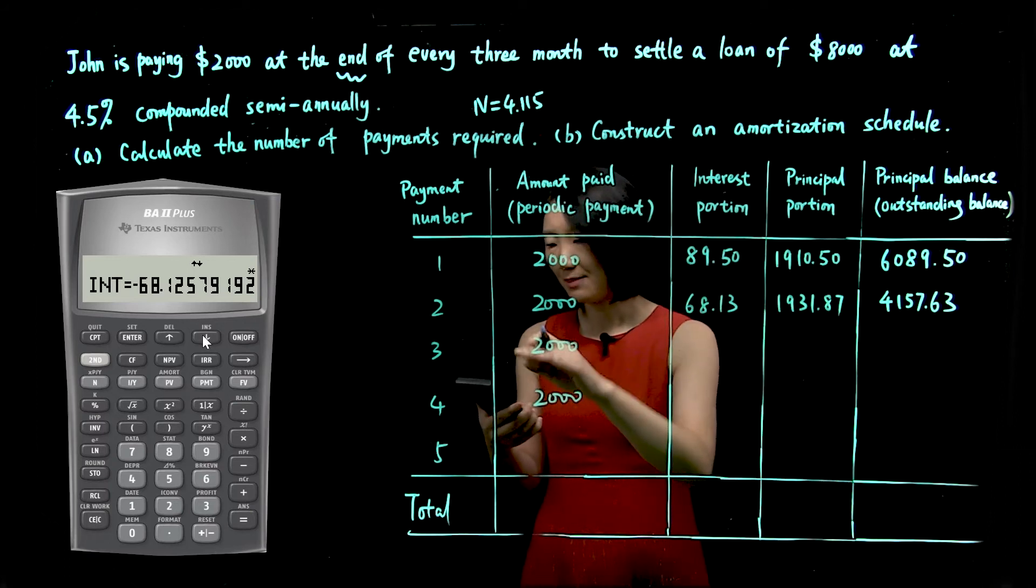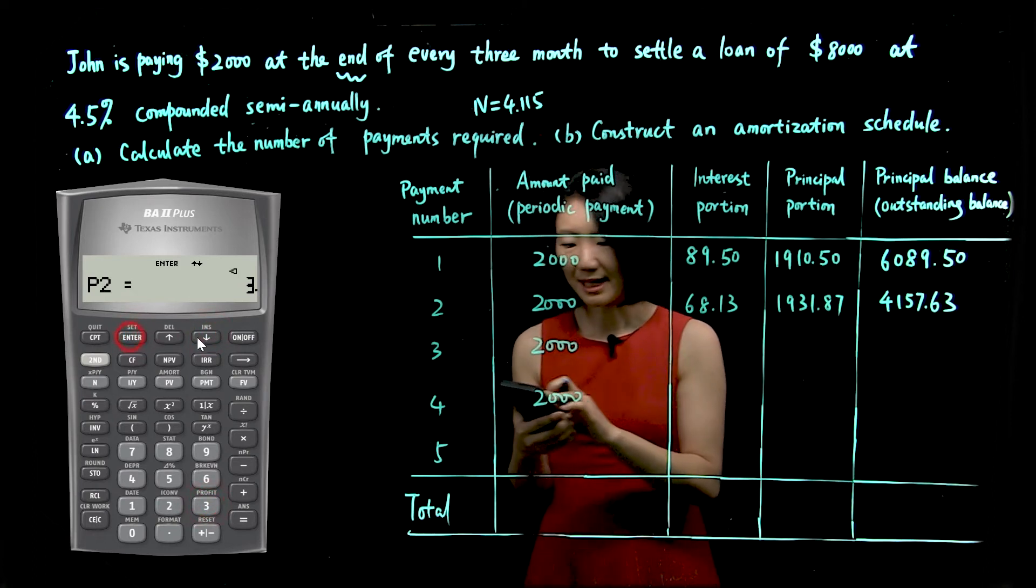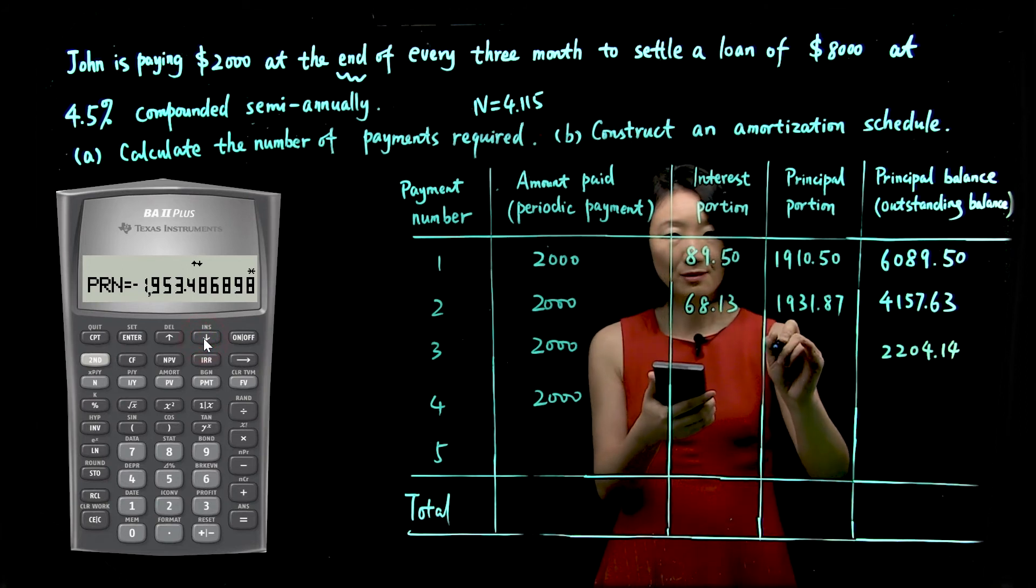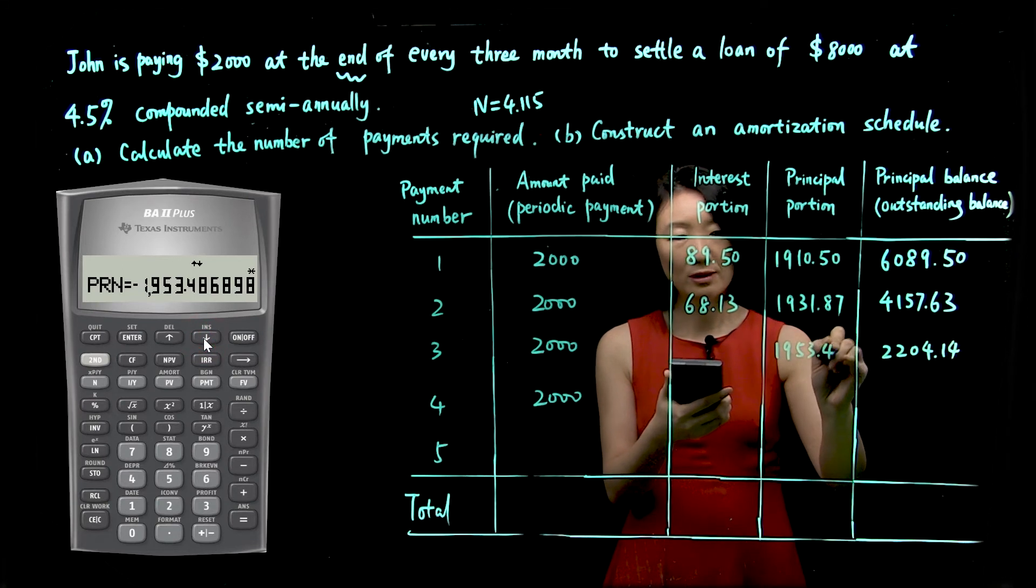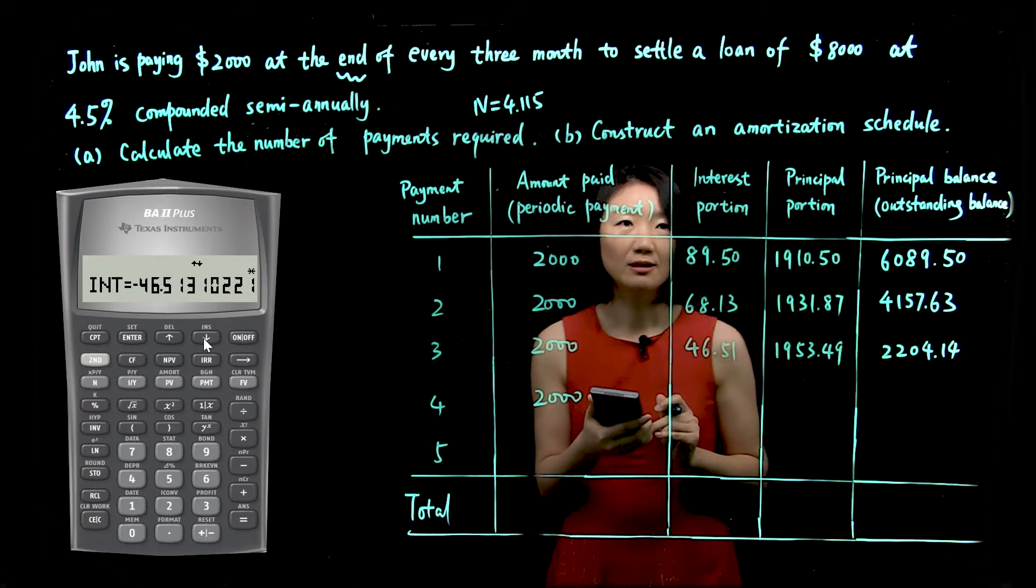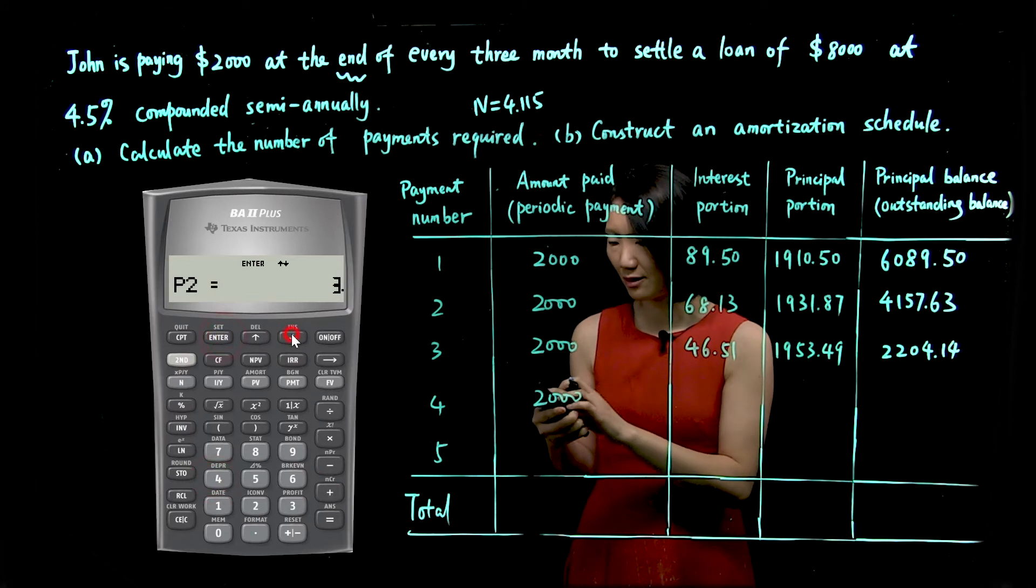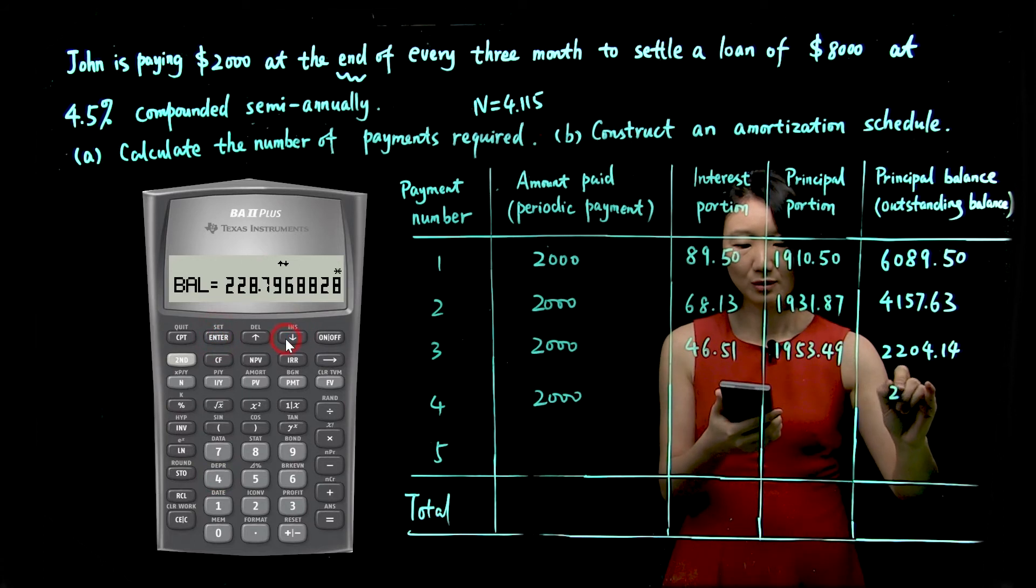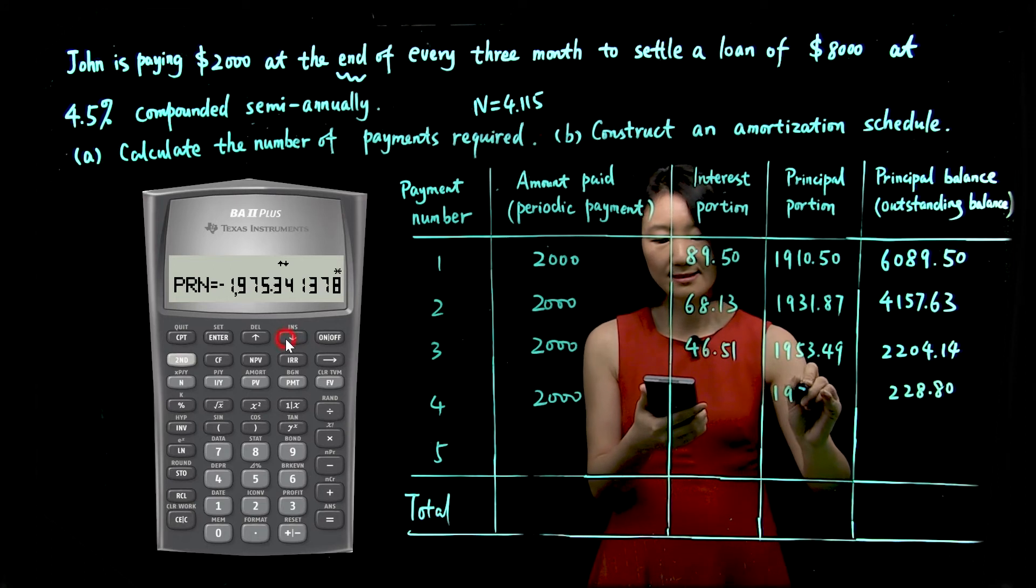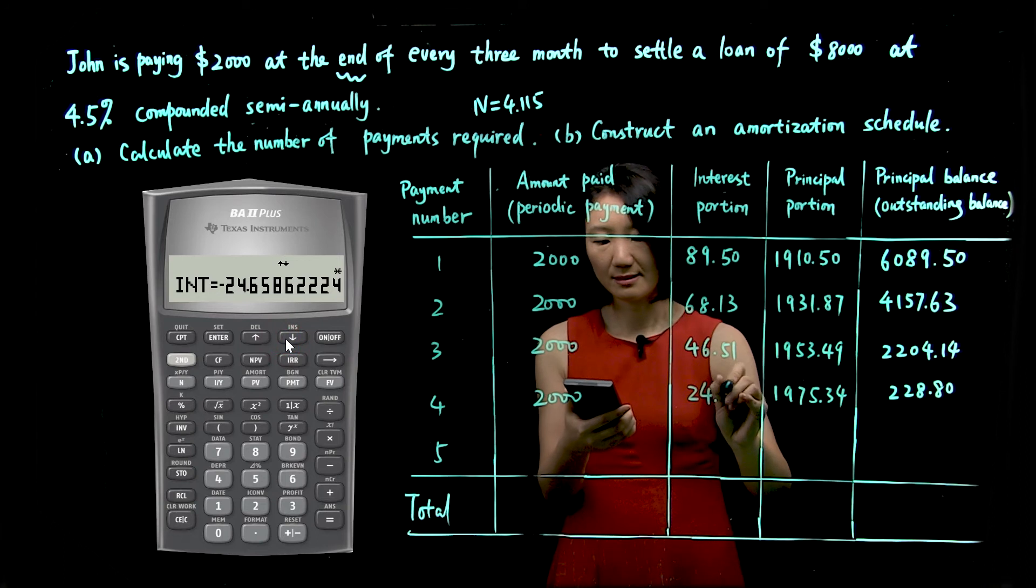Now for payment number three, same approach. P1 is 3, P2 is 3. Balance is $2,204.14. Principal is $1,953.49. Interest $46.51. For the fourth payment, we'll do the same thing. So P1 is 4, enter. P2 is also 4. Balance is $228.80. Principal is $1,975.34. Interest is $24.66.